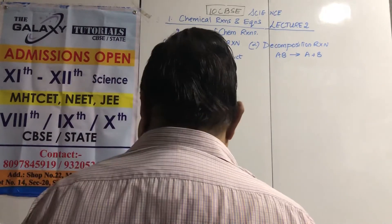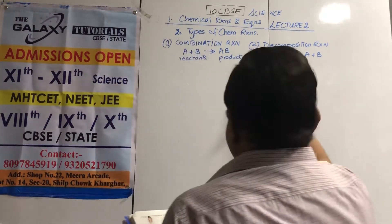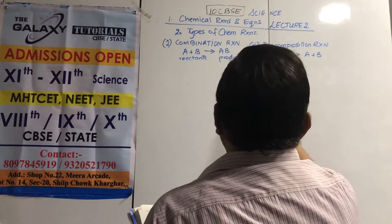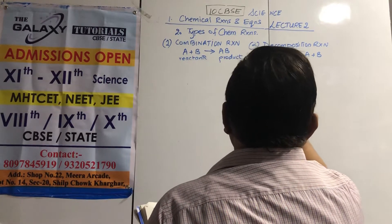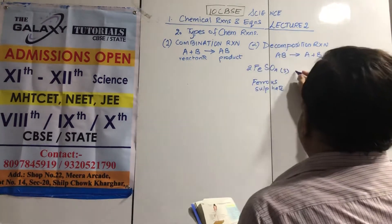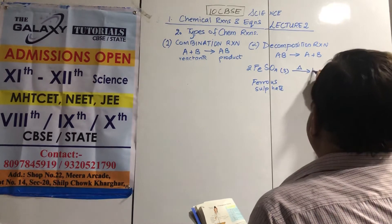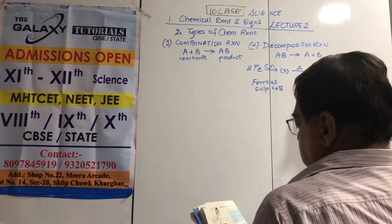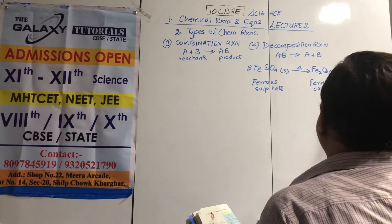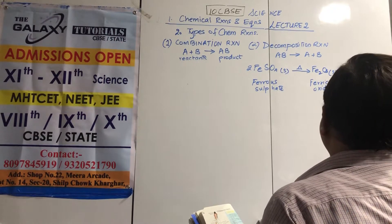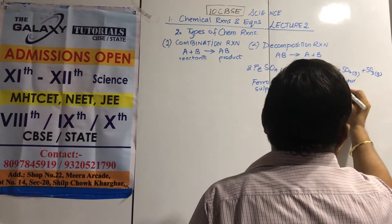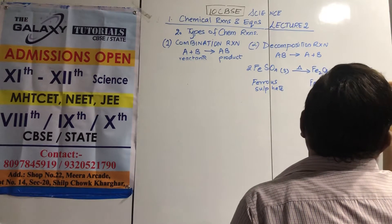Example from our book: 2FeSO4 — ferrous sulphate — when heated, gives Fe2O3 solid (ferric oxide) plus SO2 gas (sulfur dioxide) plus SO3 gas (sulfur trioxide). You write the name below each molecule.